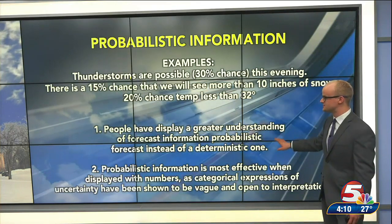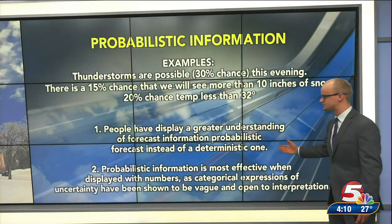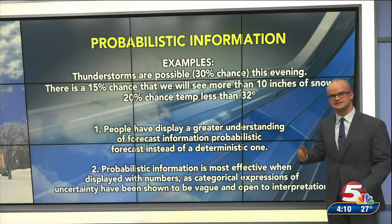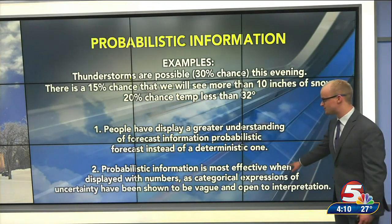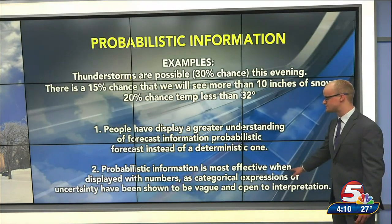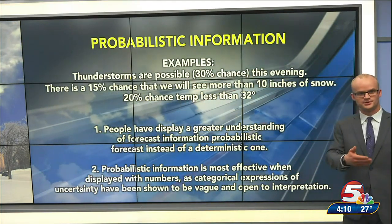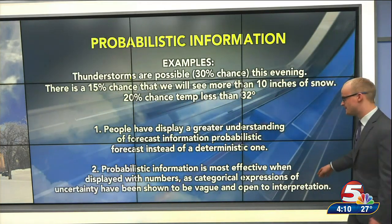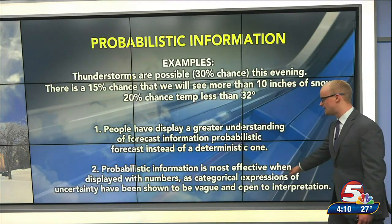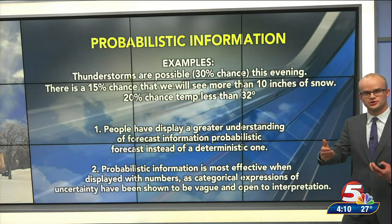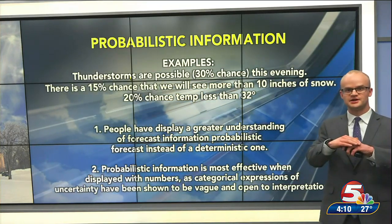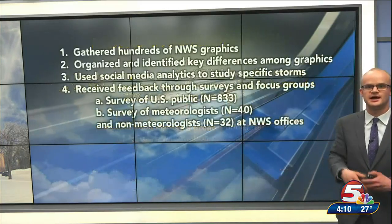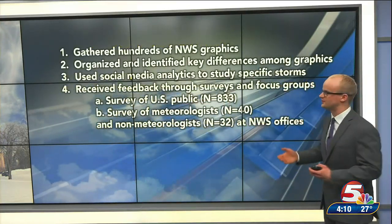From past social science research, it's been found that people display a greater understanding of forecast information when they're given probabilistic forecasts instead of deterministic ones. Probabilistic information is most effectively displayed with numbers — like 20%, 15%, 50% — as well as using threshold probabilities instead of categorical expressions like 'likely,' because people can interpret that very differently.